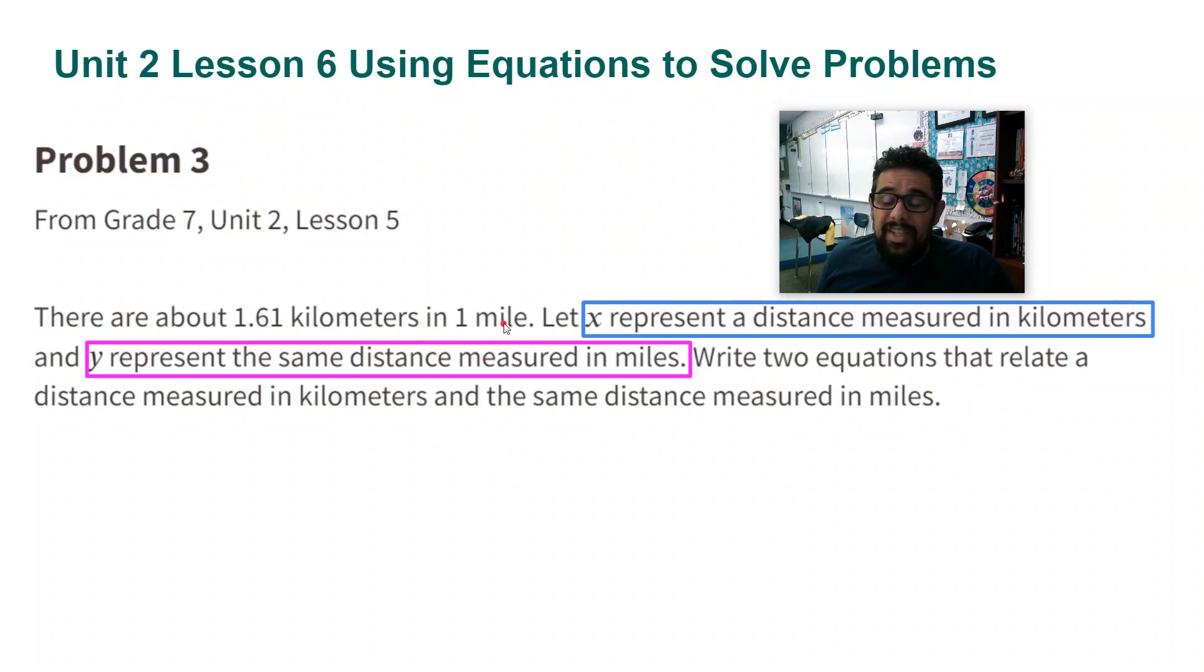If I know the number of miles, what do I need to do to find the number of kilometers? I'm going to multiply by 1.61. So that's what this equation tells me here: x is the number of kilometers, y is the number of miles. So if I know the number of miles, to find the number of kilometers, I'm going to multiply by 1.61.